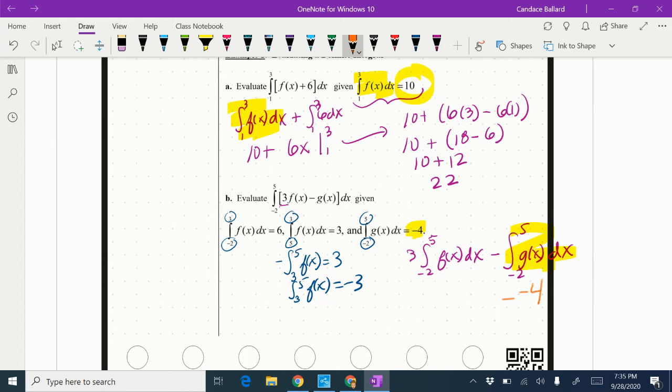Then the three is just going to hang out in front. I am going to have to break this up. Notice I can go from, I have to go from negative two to five. I don't have that but I do know from negative two to three and then I know from three to five. So I'm going to break it into those two intervals. So negative two to three of f(x)dx plus from three to five of f(x)dx.